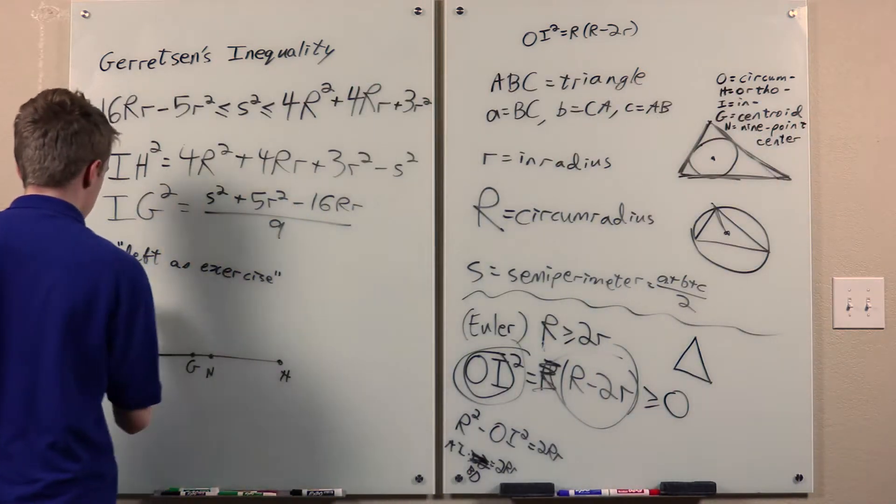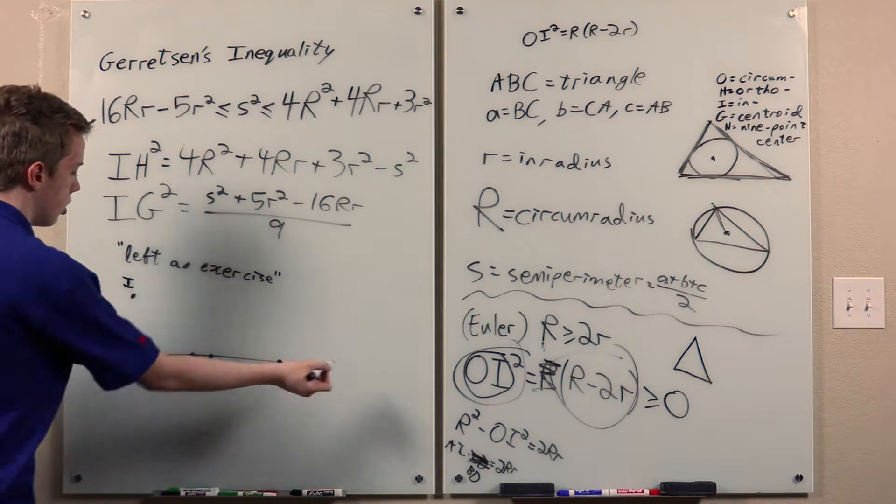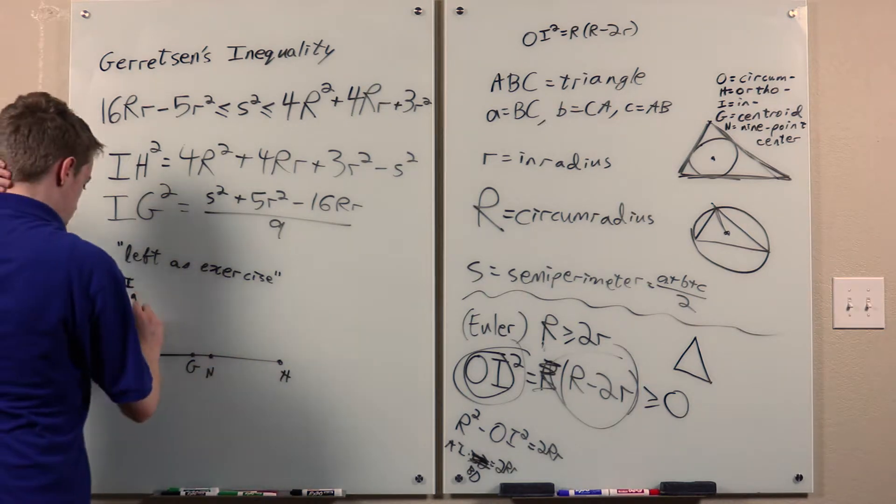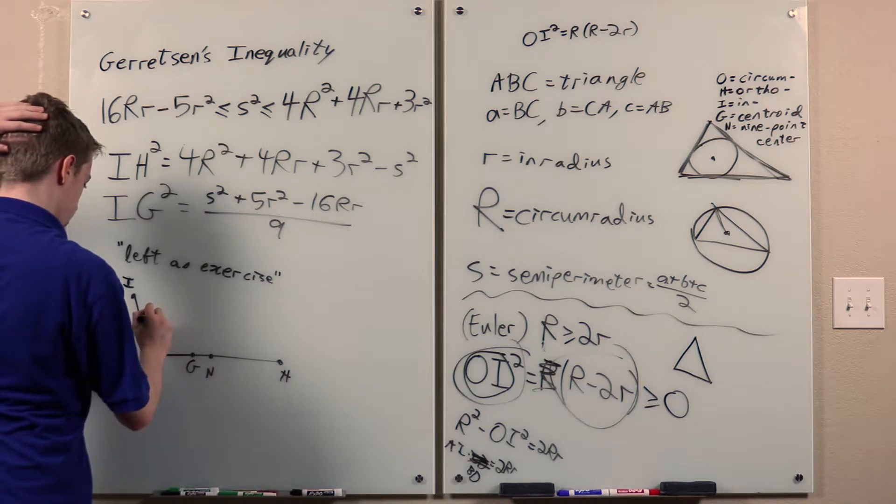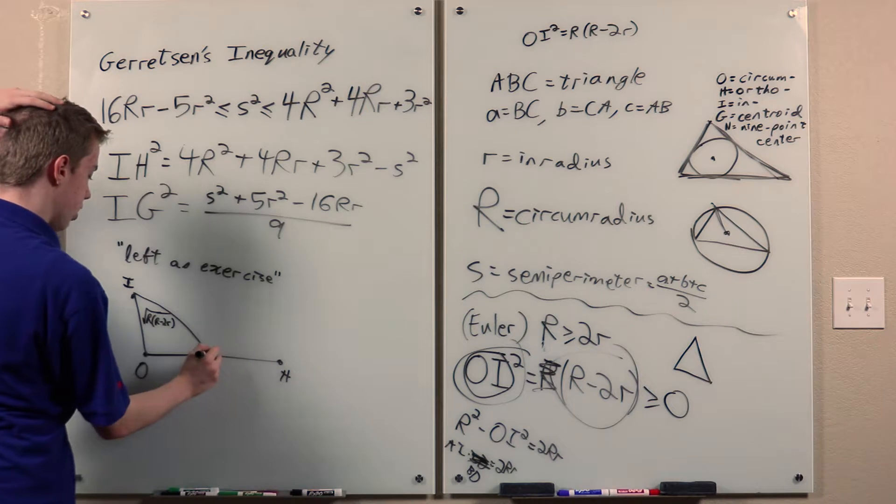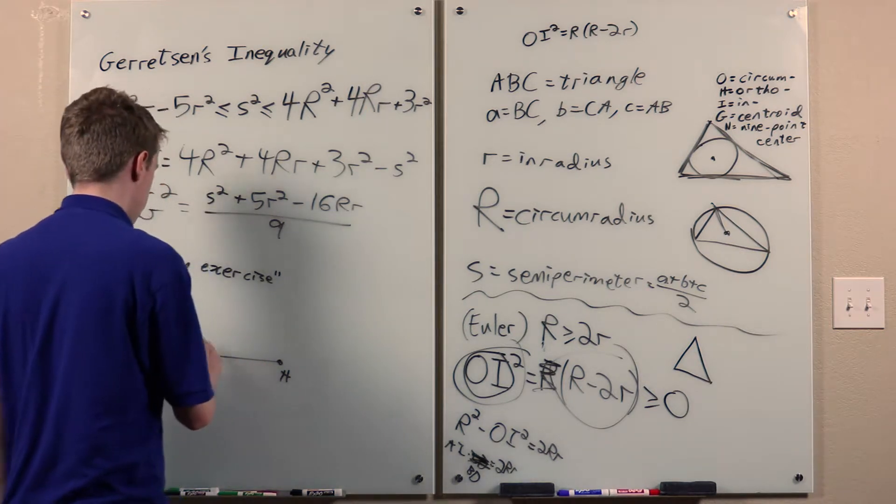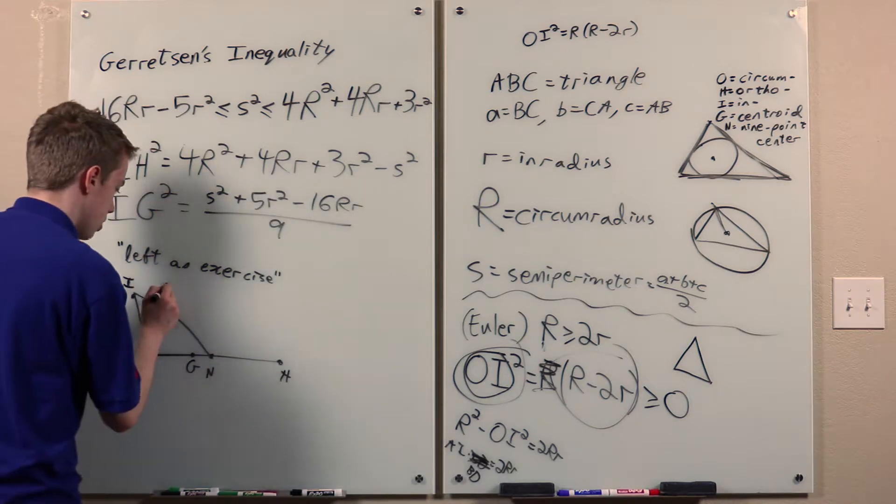And then we have some other point I, which is the in-center. But these are all collinear in that ratio. And we know this. We know that this is the square root of this. And furthermore, we know this length because it's Fuerbach's theorem that the nine-point circle is tangent to the in-circle.